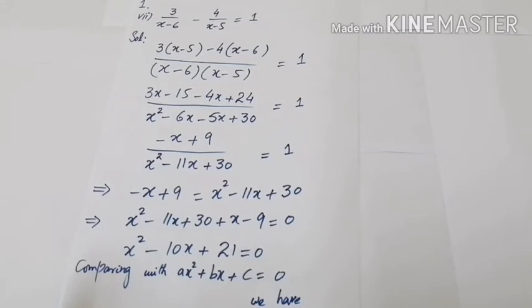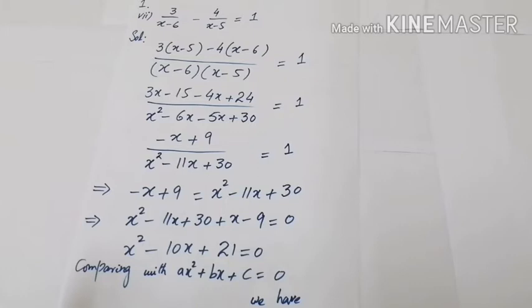Our next part is part number 7. The question is: 3/(x−6) − 4/(x−5) = 1. We start by taking the LCM on the left side, giving: [3(x−5) − 4(x−6)] / [(x−6)(x−5)] = 1.